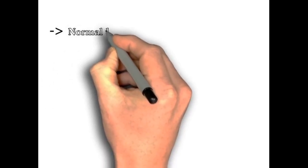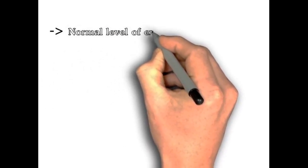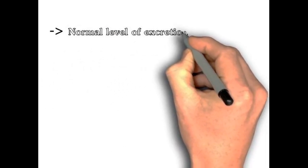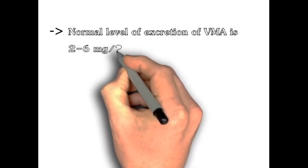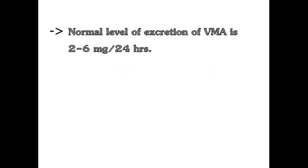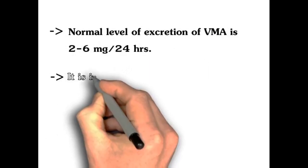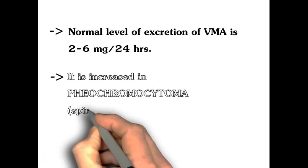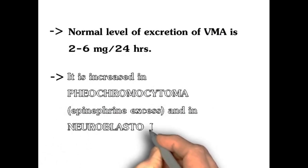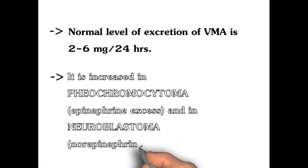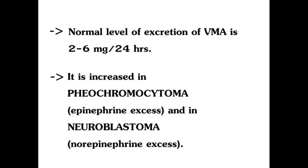The normal level of excretion of vanillylmandelic acid (VMA) is 2 to 6 milligrams per 24 hours. It is increased in pheochromocytoma (epinephrine excess) and in neuroblastoma (norepinephrine excess).